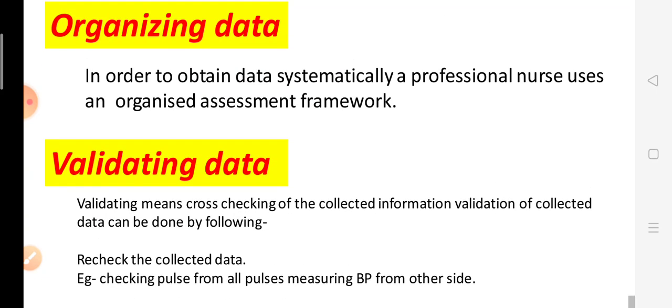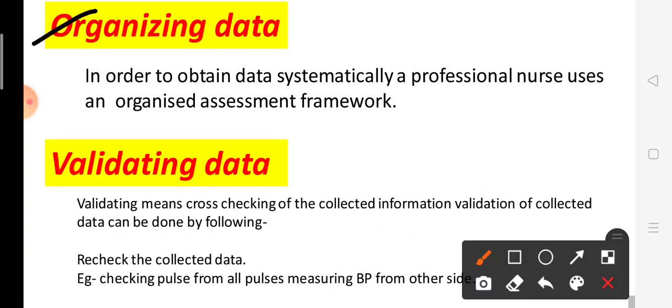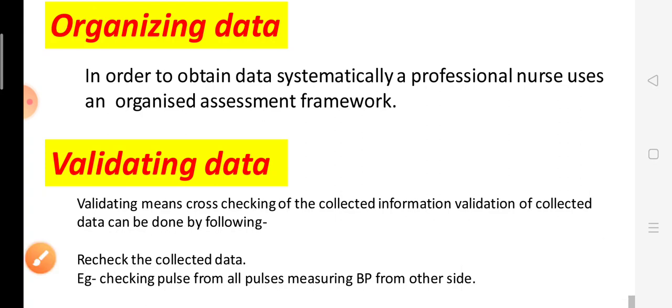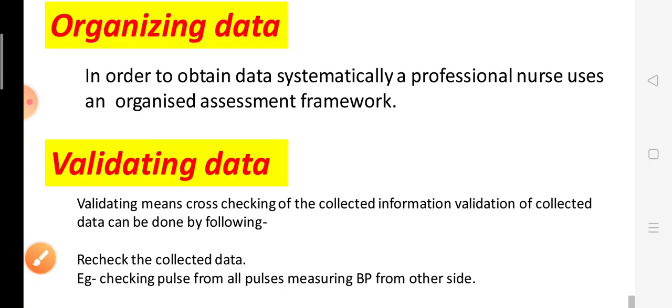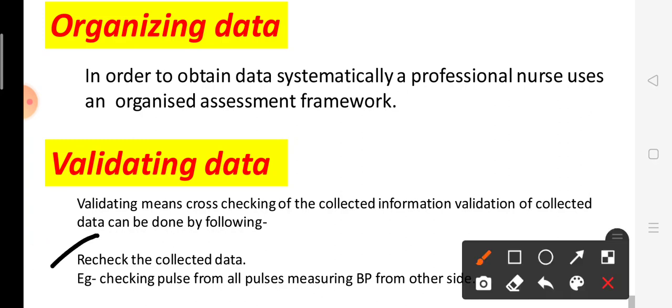Next is organizing data. After collecting all data, we have to organize it — that is called organizing data. Next is validating data. Validating means cross-checking: we check the collected data to verify its accuracy.